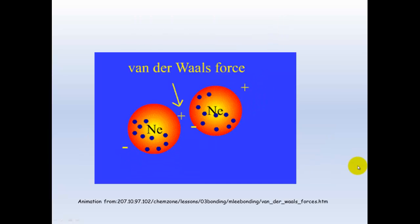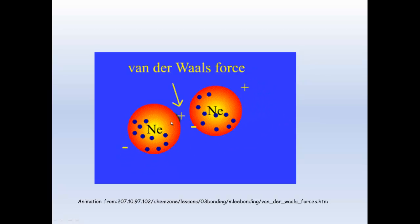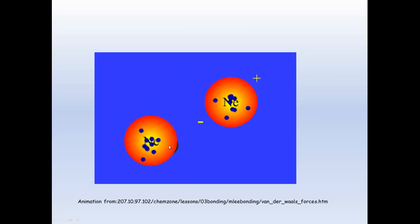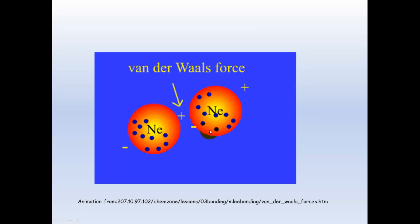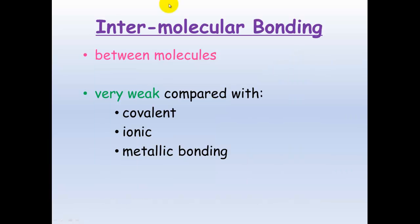And here we have neon. So even neon can attract to each other with van der Waals forces, because you get this instantaneous dipole when there's an uneven distribution of electrons. You'll see when they do attract, all the electrons are on this side of this neon and they're all on this side of this neon, creating a slight negative on this side and a slight positive on this side.